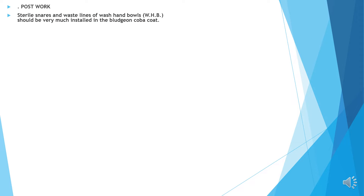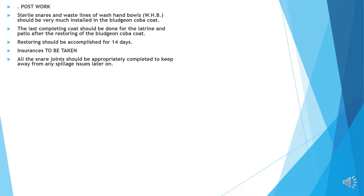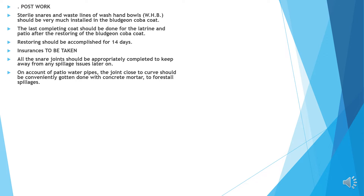Post-work: sanitary traps and waistlines of wash hand bowls should be well installed in the coba coat. The last finishing coat should be done for latrine and patio after curing the coba coat. Curing should be accomplished for 14 days. All the trap joints should be appropriately finished to keep away from any spillage issues later on. In the case of rainwater pipe, the joint near the bend should be conveniently finished with cement mortar to prevent spillages.